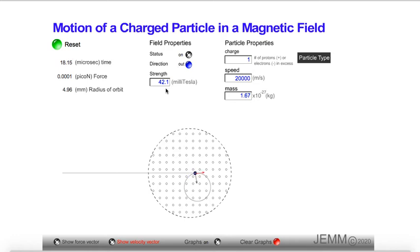Notice the magnetic field strength is 42.1 millitesla. Because it's a proton, it has a plus one charge. The speed is 20,000 meters per second. And the mass of the proton is given by this value here.